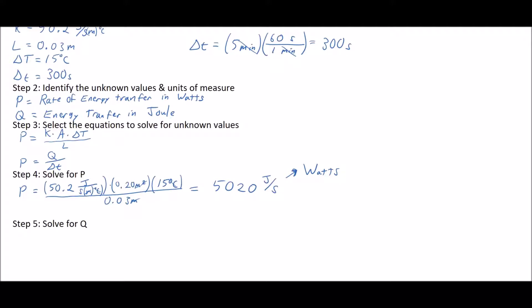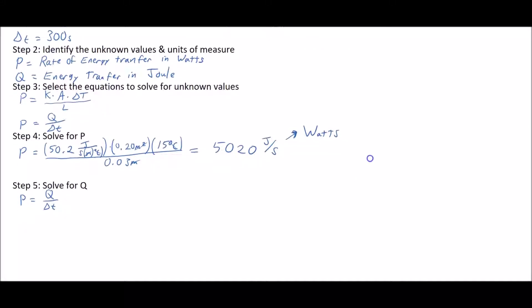Now we need to find the actual amount of energy that's been transferred during that amount of time. To solve for Q, we take P equals Q divided by delta t and rearrange that to solve for Q. Q ends up being P times delta T, and so we plug in our numbers.